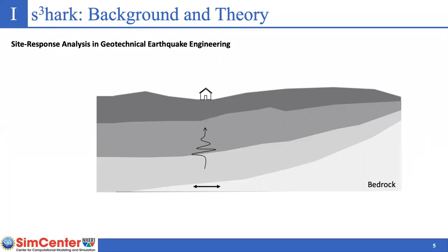In earthquake scenarios, when ruptures or faults generate seismic waves, they are transmitted and modified by path effects and site effects as they travel through soil layers before reaching the ground surface. Due to site effects, the motion will be amplified at the ground surface. Site effects and site response are well recognized to have a profound influence on surface ground motion as a result of variability in superficial geology and the complexity in its characterization.